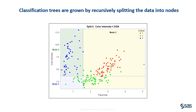The second split divides node 1 into two child nodes, node 3 and node 4, based on whether the color intensity is less than or greater than 3.624. All the samples in node 3 come from the second cultivar, and almost all the samples in node 4 come from the third cultivar. This process continues, resulting in leaf nodes with little or no variability.